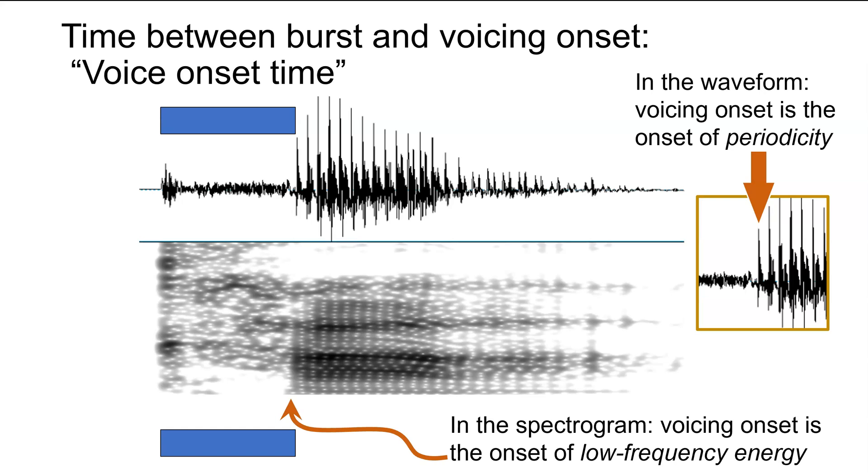We can also see it in the spectrogram because voicing onset is the onset of low-frequency energy. So just as we have this upper blue rectangle corresponding to the aperiodic point in the waveform, we also have this blue mark down here corresponding to where we have a lack of low-frequency energy in the spectrogram. The reason we know this is low-frequency energy is because the rate of vibration of the vocal cords is in the low hundreds. So when we're visualizing that on a spectrogram that goes between zero and five thousand, we know it's going to be at the very lower point on the graph.